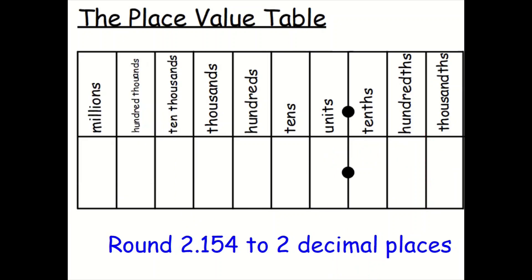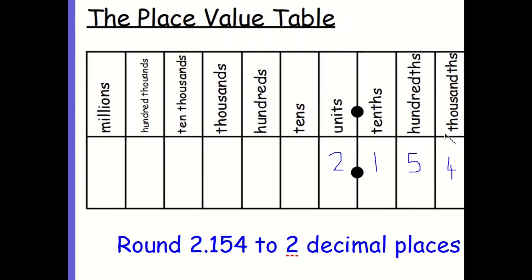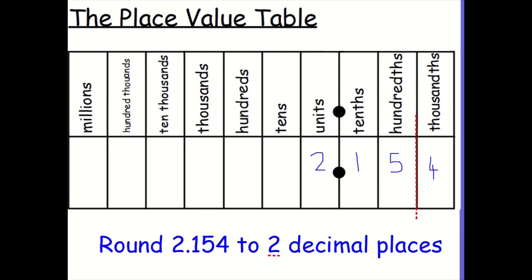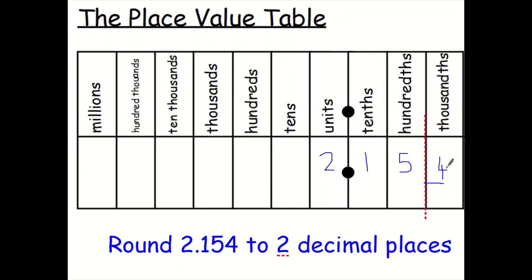What about rounding 2.154 to two decimal places? I've got three things after the decimal point but I want two things. I ask myself: does that 4 affect the 5? It's four or less, so I'm letting it rest at 2.15. And just because that is a five, it doesn't keep having a knock-on effect — that five doesn't now change the one. This is just two decimal places, and that's where you stop.